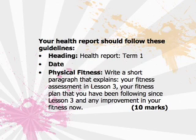Your health report should follow these guidelines. The heading will be 'Health Report, Term 1', followed by the date. Section 1 is physical fitness — write a short paragraph that explains your fitness assessment in Lesson 3, your fitness plan that you've been following since Lesson 3, and any improvement in your fitness now. This section is for 10 marks.